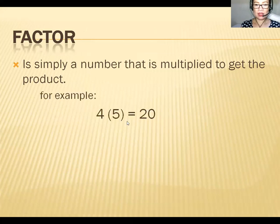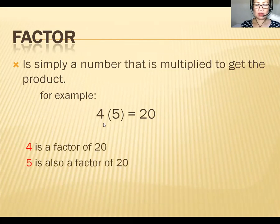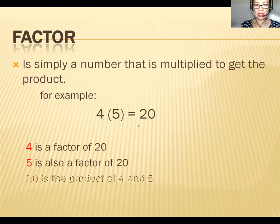For example, four times five is equal to 20, so four is a factor of 20 and five is also a factor of 20. Here, 20 is the product of four and five, so the factors are four and five.